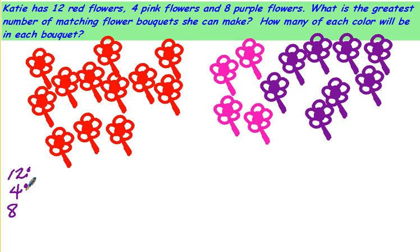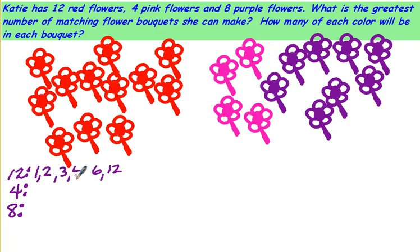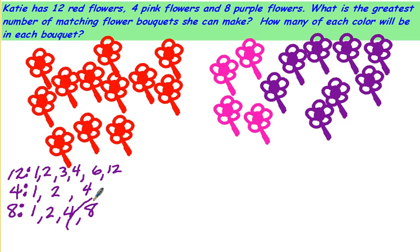We want to find the greatest common factor of each of these. The factors of 12 are 1 and 12, 2 and 6, and 3 and 4. The factors of 4 are 1, 4, and 2. The factors of 8 are 1 and 8, and 2 and 4. Look and see if any of the factors go into the others evenly — four does, and sure enough, four is your greatest common factor.